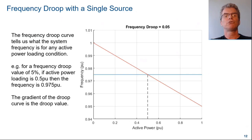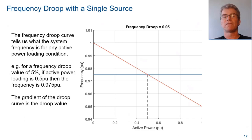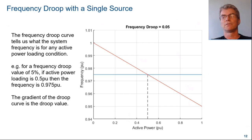The frequency droop curve tells us what the system frequency is for any active power loading condition. For example, for a frequency droop value of 5%, if active power loading is 0.5 per unit, then the frequency will be 0.975 per unit. The gradient of the droop curve is the droop value.